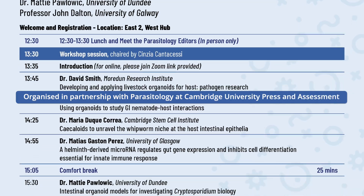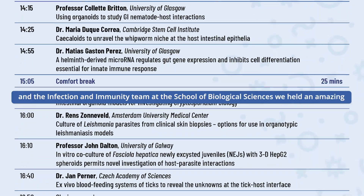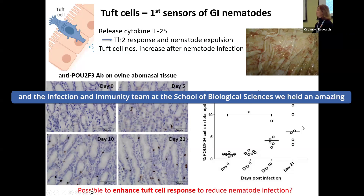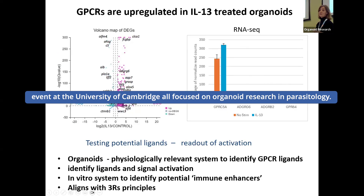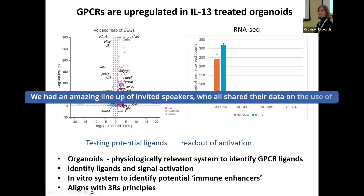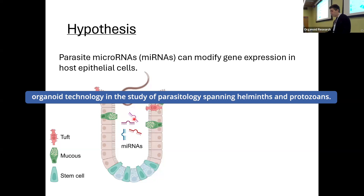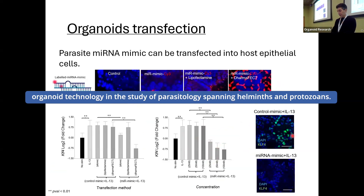Organized in partnership with Parasitology at Cambridge University Press and Assessment and the Infection and Immunity Team at the School of Biological Sciences, we held an amazing event at the University of Cambridge all focused on organoid research in Parasitology. We had an amazing lineup of invited speakers who shared their data on the use of organoid technology in the study of Parasitology, spanning Helminths and Protozoans.